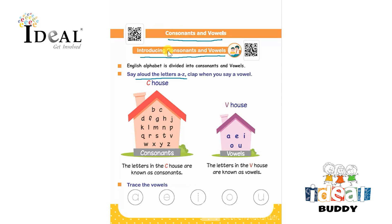Here, as you can see, there are two houses. The letters in the C house are the consonants, and the letters in the V house are the vowels. Let the child go through all the letters in these two houses. The letters in the C house are known as consonants and the letters in the V house are known as vowels.